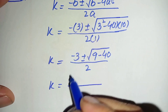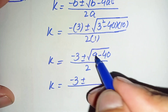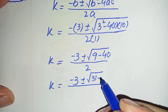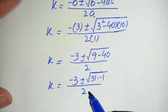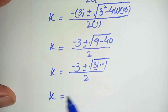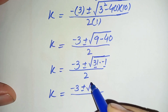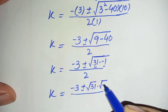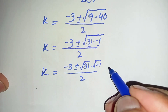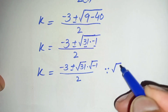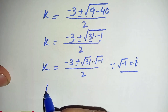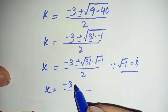Further simplifying: k equals minus 3 plus or minus square root of 9 minus 40, which gives minus 31. We can write minus 31 as 31 times minus 1. Splitting the square root over 31 and minus 1 gives square root of 31 times square root of minus 1. We know that square root of minus 1 is the imaginary unit i, so we replace square root of minus 1 with i.